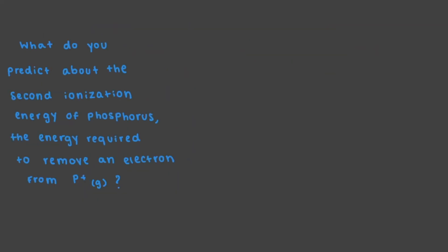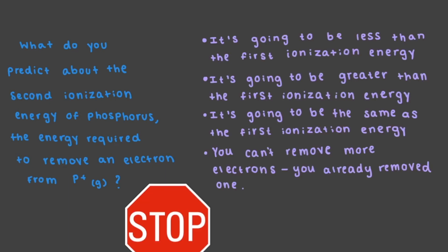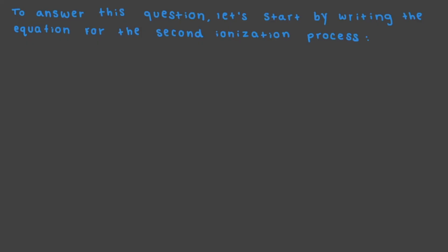What do you predict about the second ionization energy of phosphorus, the energy required to remove an electron from P plus? To answer this question, let's start by writing the equation for the second ionization process. We start with our P plus cation. It has 15 protons and 14 electrons. And in the process of ionizing another electron, we are left with a P2+ cation.